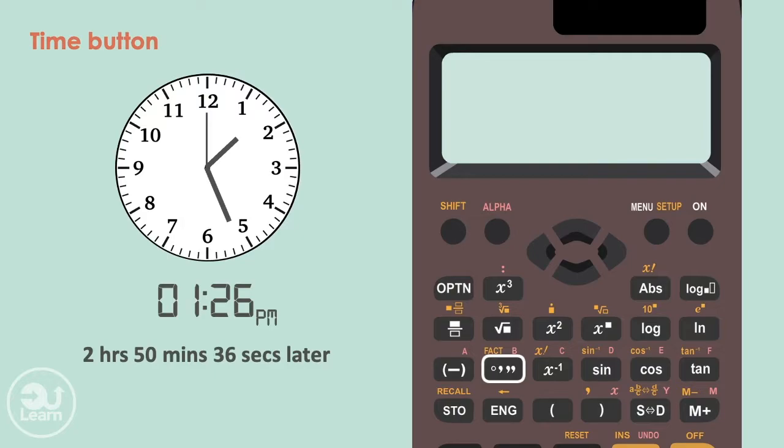Let's say we wanted to know what time it was, 2 hours, 50 minutes and 36 seconds later from the time 1:26 pm. We first press 1, followed by the time button, and then 26, followed by the same time button. We press plus and repeat the same process for adding 2 hours, 50 minutes and 36 seconds.